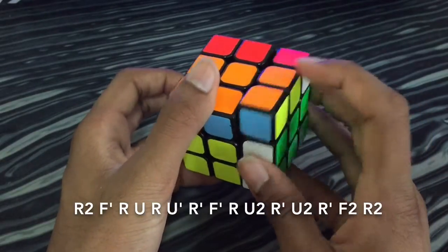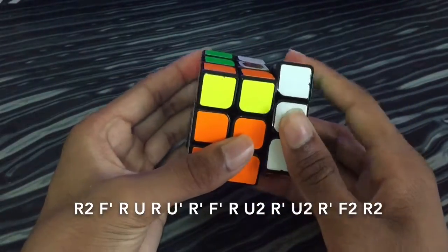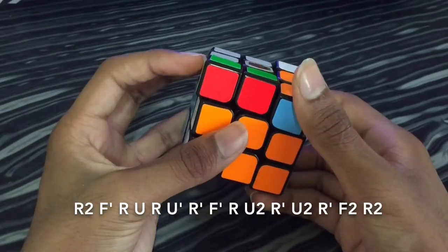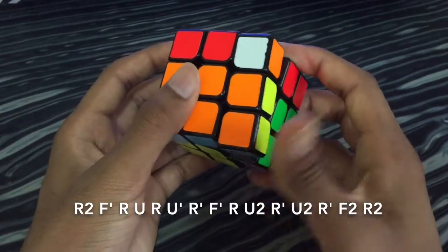Then take this pair out, insert it back in, and do an F prime with your thumb.